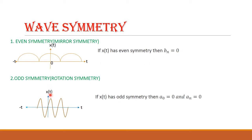Odd symmetry means you get an inverted image on the left-hand side — a mirror image, but inverted on the LHS. If a signal exhibits odd symmetry, then a₀ = 0 and aₙ = 0.